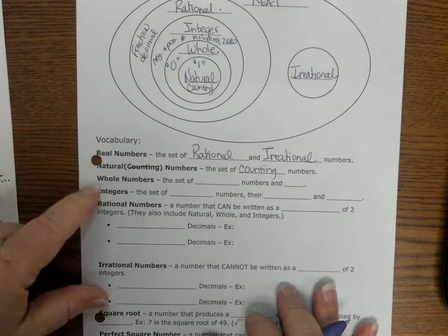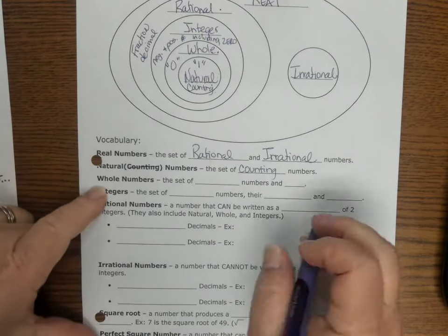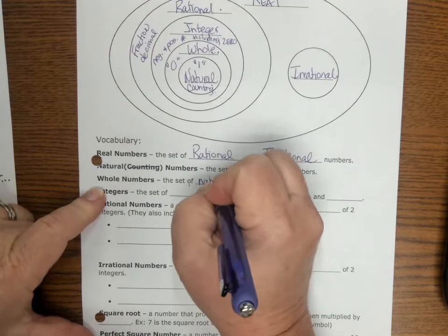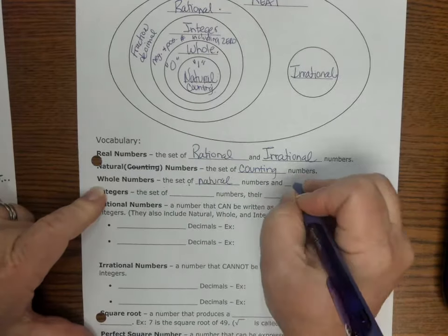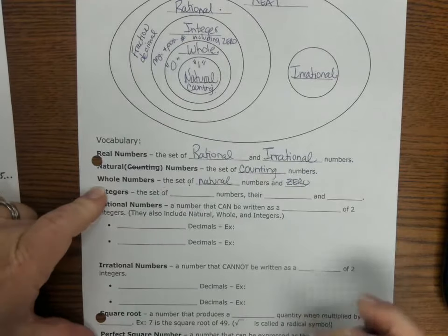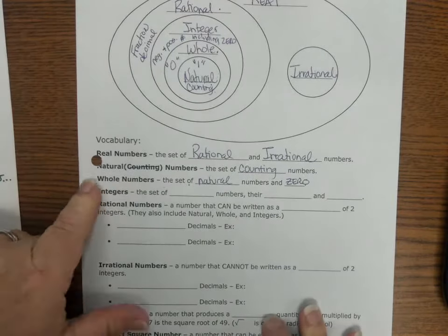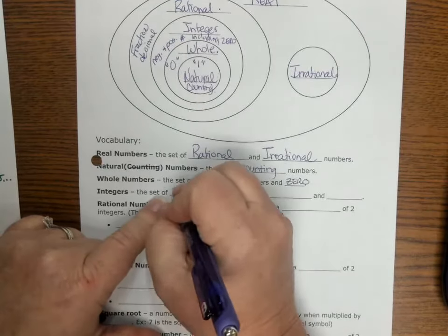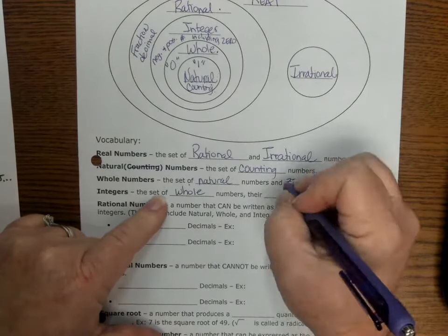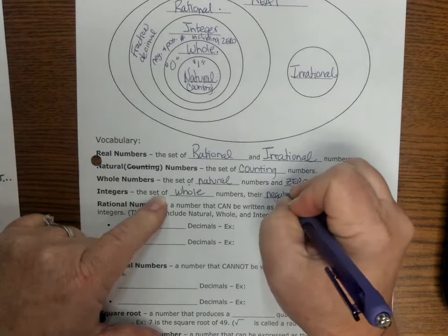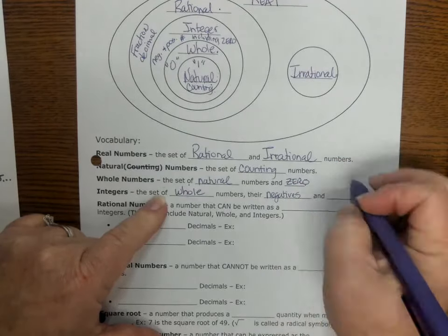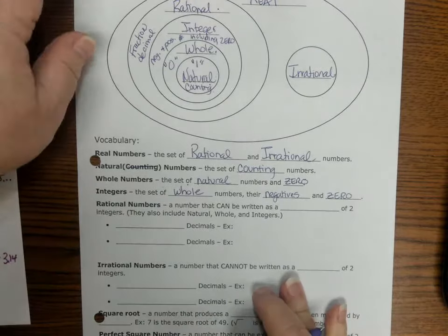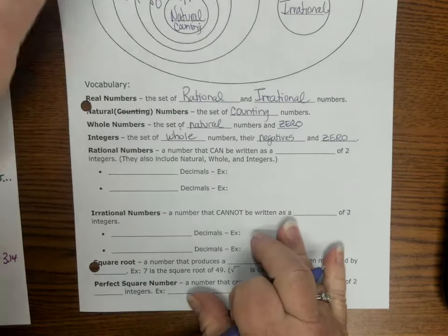The difference between a natural or a counting number and a whole number is when you added zero. So the set of natural numbers and zero, so we add zero to the mix. Then you go to integers, which is the set of all whole numbers, their negatives and zero, because zero is neither negative nor positive.